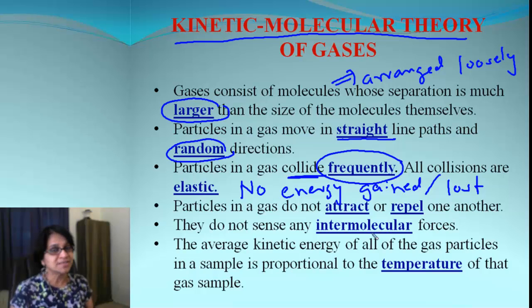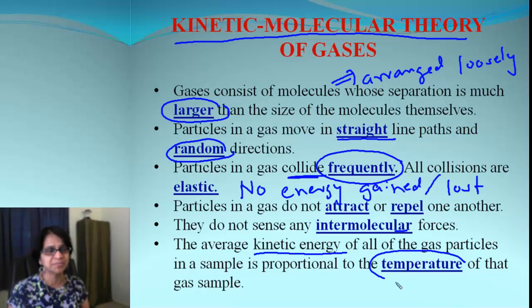Next, particles in the gas do not have any attraction or repulsion. They do not sense any intermolecular forces. And the last and important one is, since they all are moving, they possess kinetic energy. And this kinetic energy, the average of that, is a measure of temperature. So let me get it straight. If energy goes up, if particles are moving faster, what is going to happen to temperature?